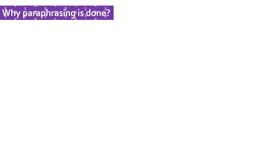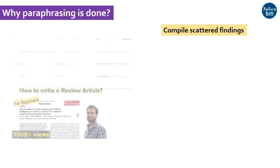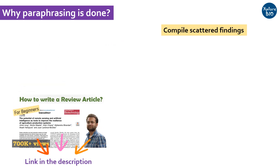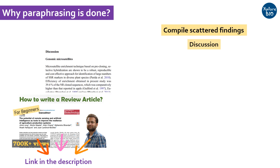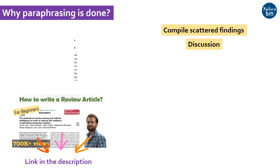The major question here is: why is paraphrasing done? Paraphrasing is done, and sometimes even essential, to assemble the scattered findings in different scientific works into your study. This is especially useful when you write a review paper or literature review. Paraphrasing is also done while writing the discussion section of your research paper, where you may need to discuss a novel finding in the light of previously published work. Paraphrasing is also a way to clarify or simplify a concept or work.